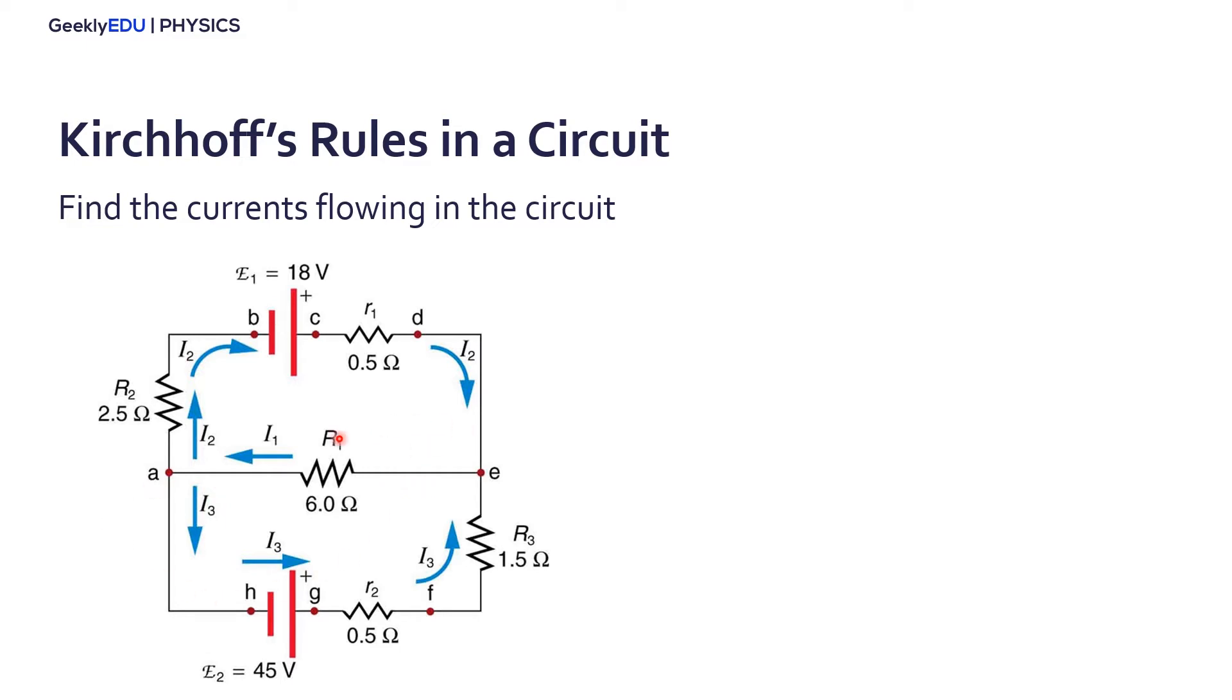Let's start with Kirchhoff's first rule, the junction rule. We're going to apply it at this point here, point A. So I already labeled the currents: I1, I2 and I3. Applying the junction rule, we can say that I1 is I2 plus I3. That's our first equation.